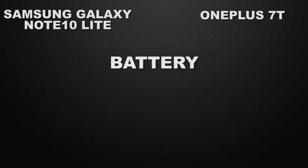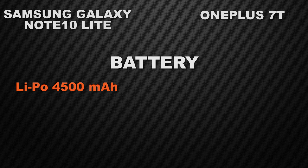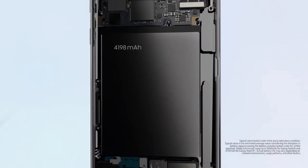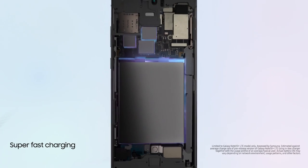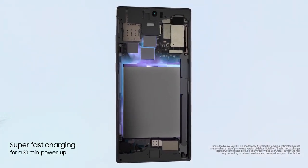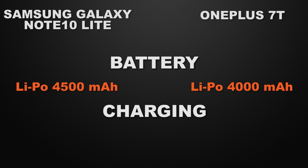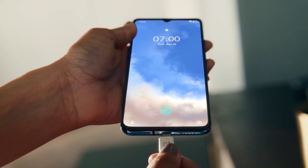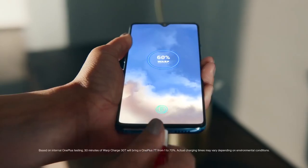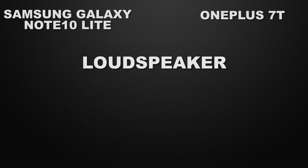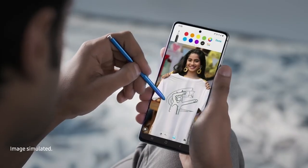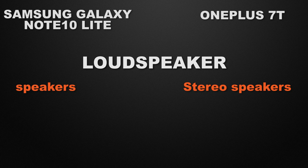Let's talk about the powerhouse of the devices. Note 10 Lite comes with a lithium polymer 4500mAh battery and OnePlus 7T comes with a lithium polymer 4000mAh battery, so the winner in battery capacity is Samsung Galaxy Note 10 Lite. For charging, Note 10 Lite comes with 25W fast charging while OnePlus 7T comes with 30W Warp Charging, so the winner is OnePlus 7T. Note 10 Lite comes with normal speakers but OnePlus 7T comes with stereo speakers, so the winner is OnePlus 7T.